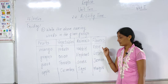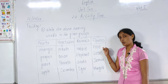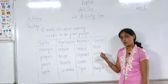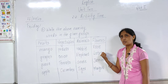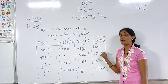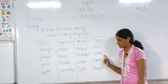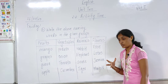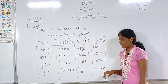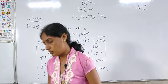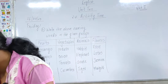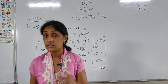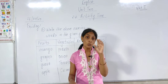Rose means gulab in Marathi. Lotus — lotus is called kamal. Jasmine means jaswandi. And marigold — marigold is what we call jindu in Marathi.